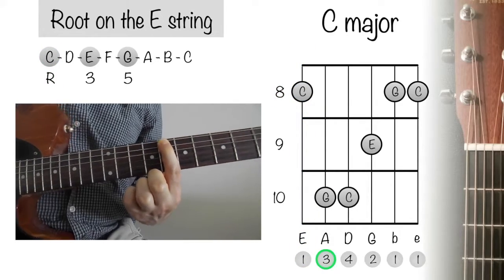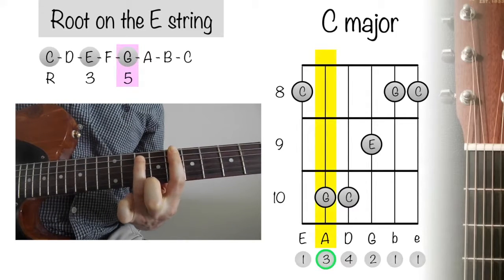Next, take finger 3, or your ring finger, and play the note G on the A string, fret 10.